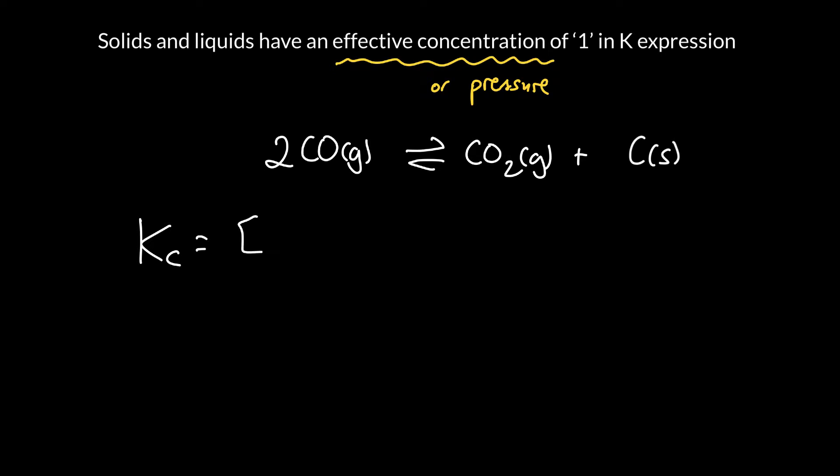We can write Kc equals the concentration of carbon times the concentration of carbon dioxide. Those are the products over the reactants, so carbon monoxide, and we've got two of them, so that is squared.